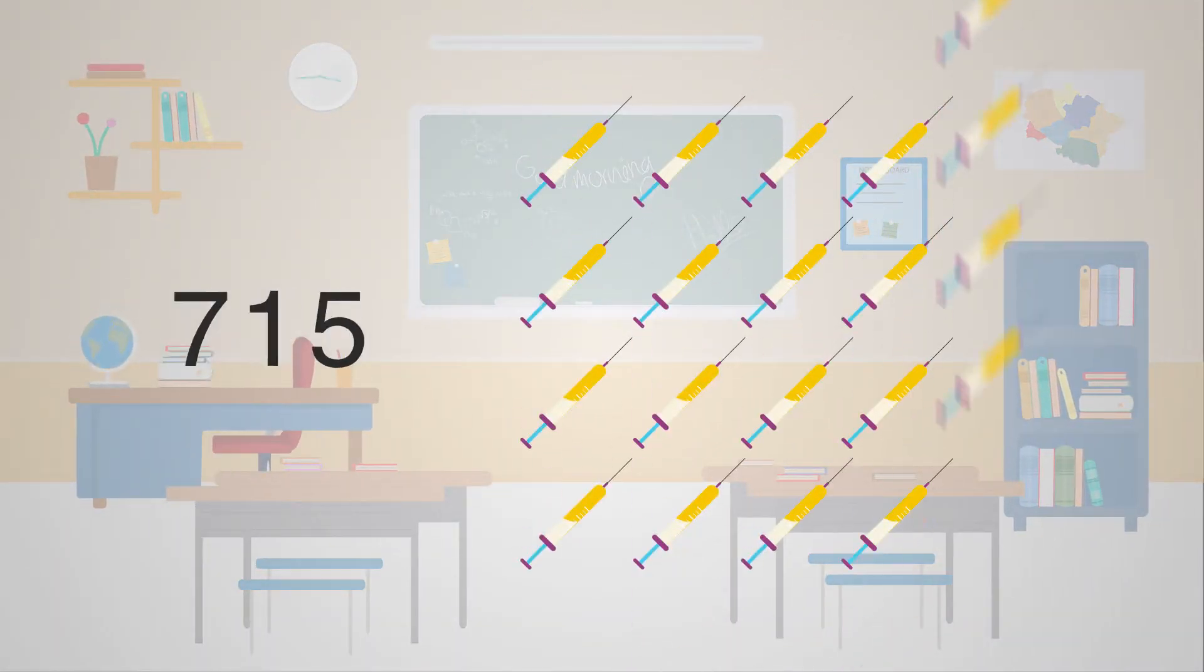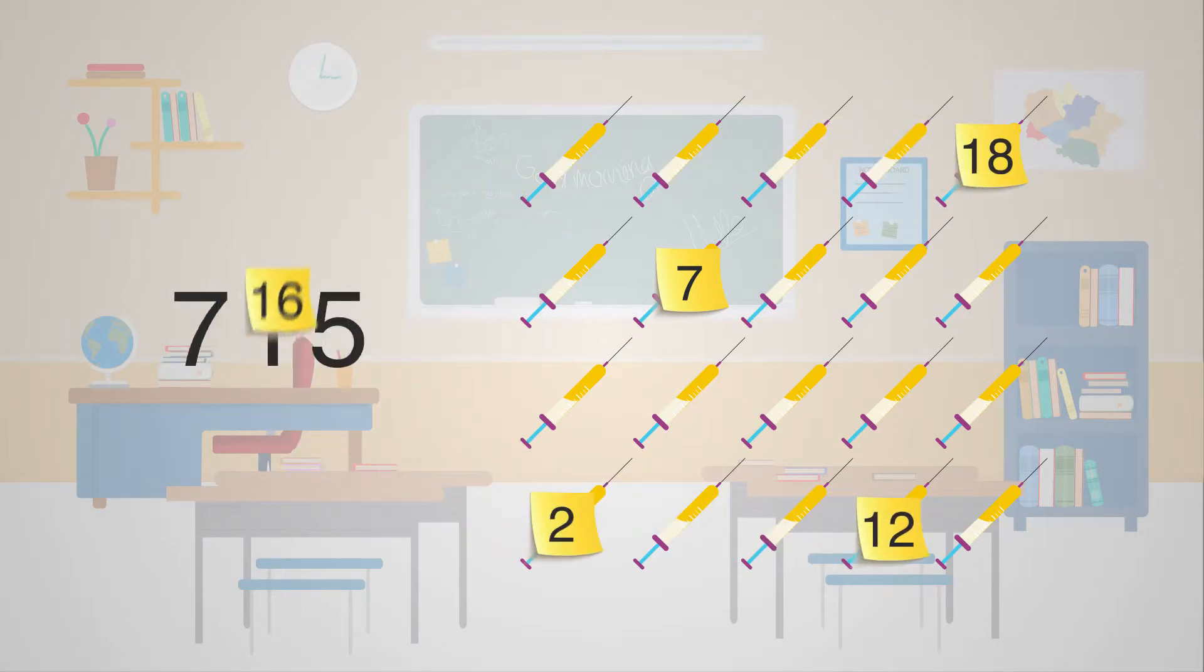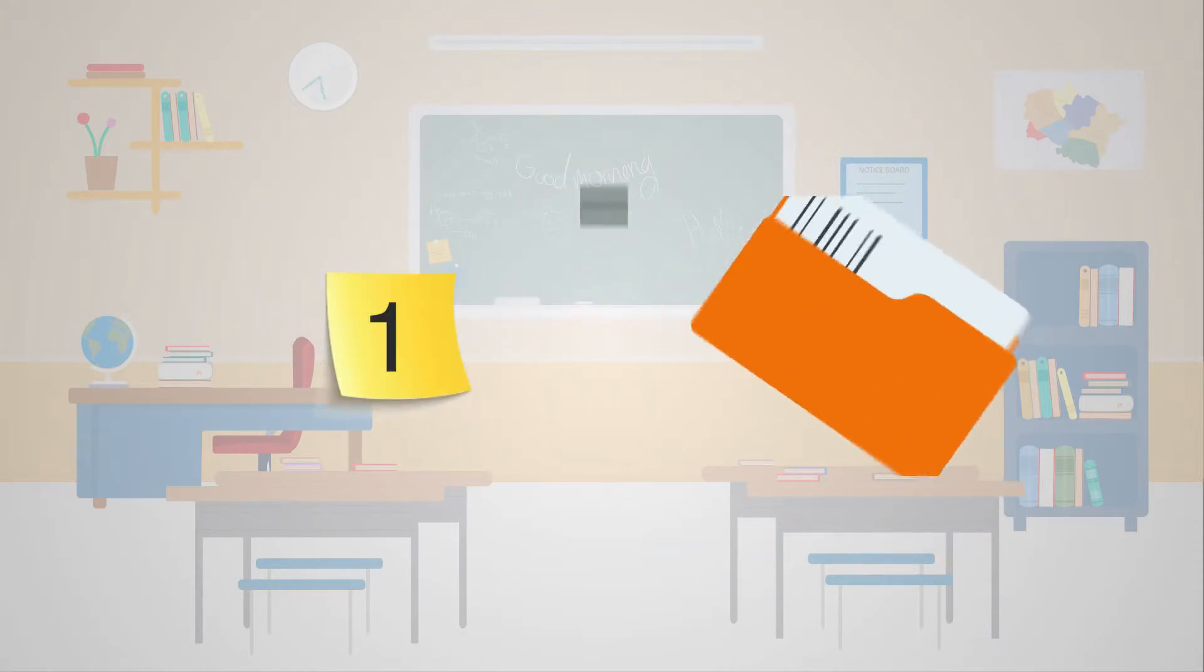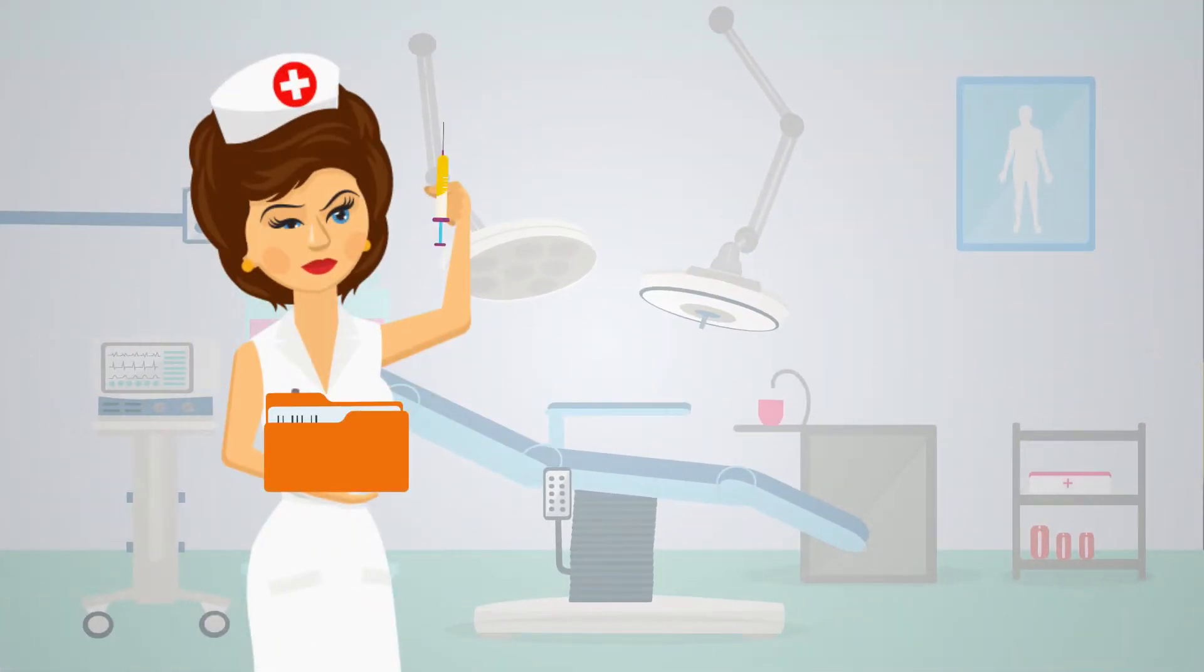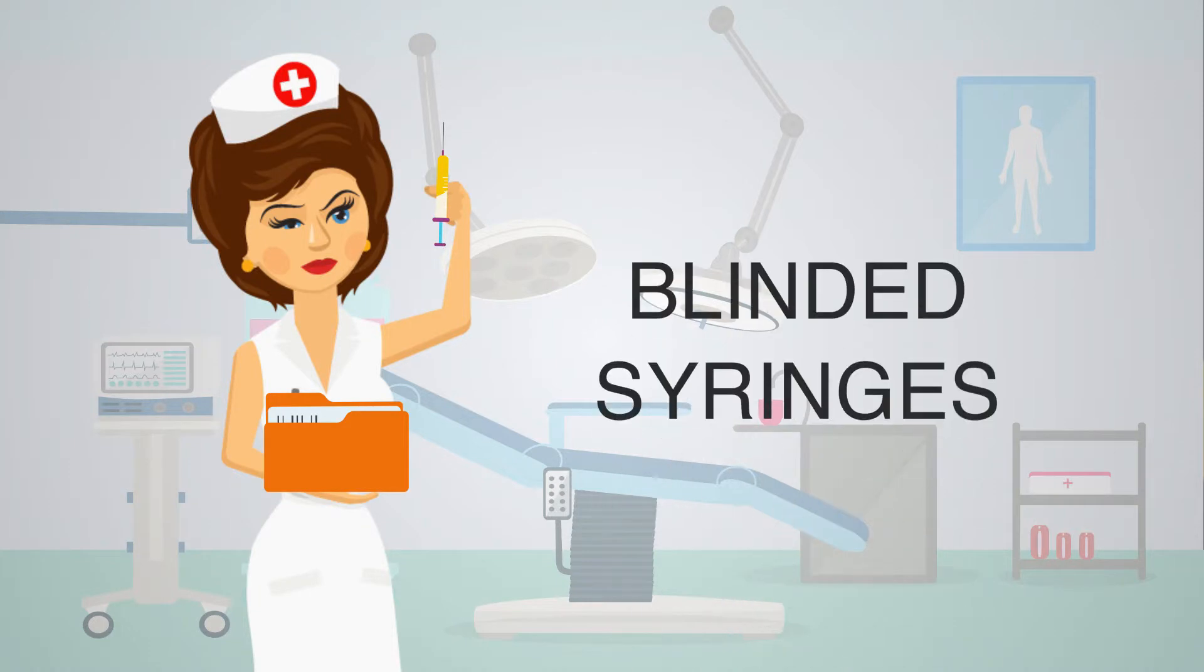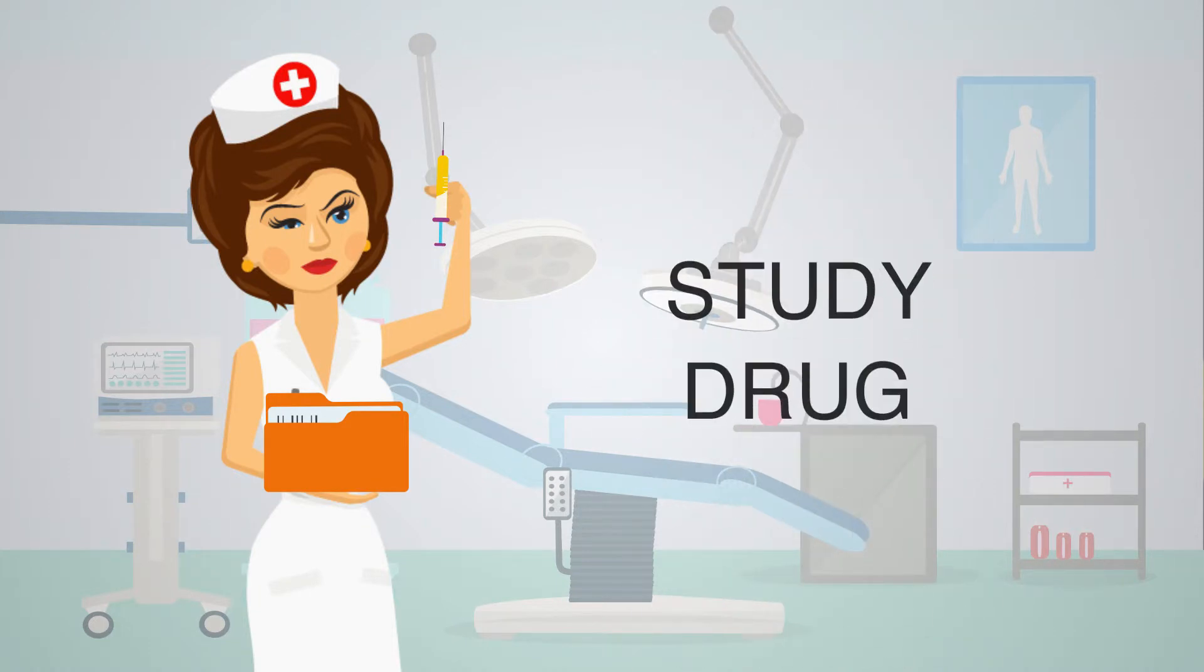Each randomization number had a corresponding sealed opaque envelope containing information on the study treatment. The envelope was then opened by the nurse in the operating theater, who also prepared the blinded syringes with the study drug before other staff involved in the procedures entered the operating room.